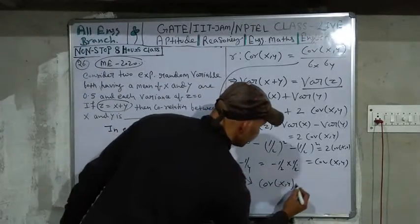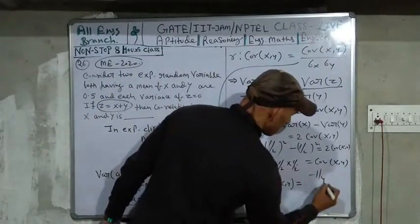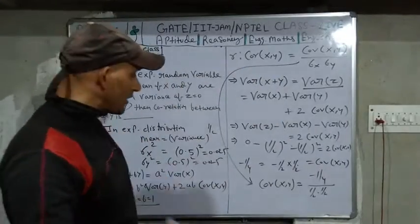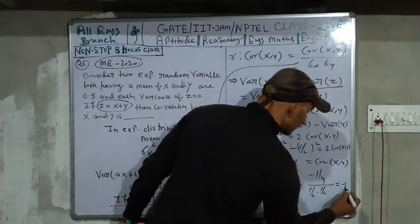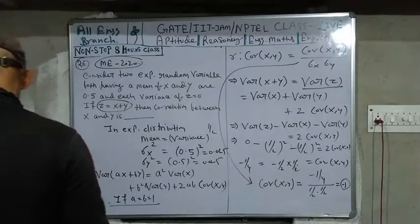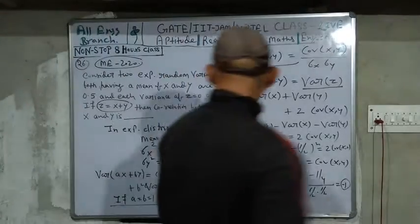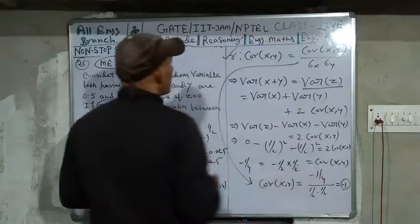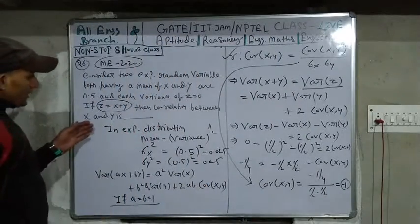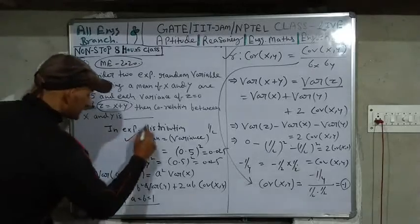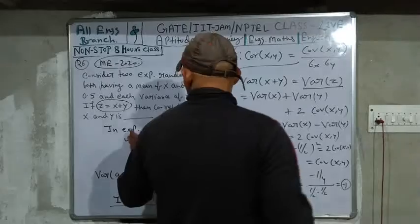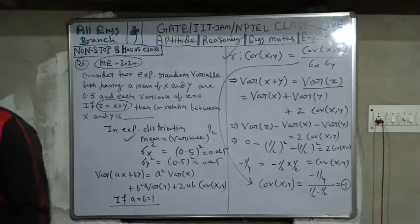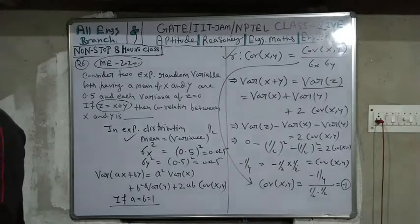The correlation of X and Y equals covariance(X, Y) divided by sigma_x times sigma_y, which is (-1/4) divided by (1/2 times 1/2) equals (-1/4) divided by (1/4) equals minus 1. The answer is minus 1. We used only two key formulas: the variance expansion formula and the exponential distribution property that mean equals variance to the power one-half.